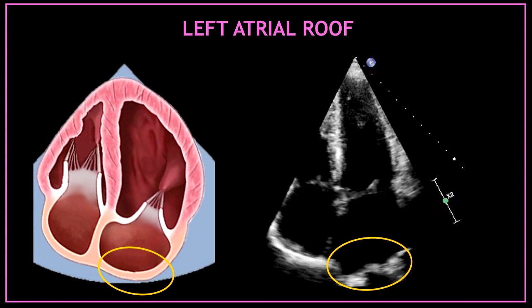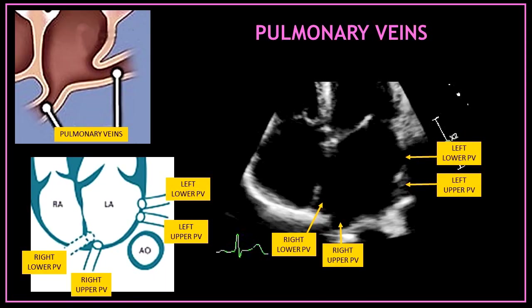This structure at the bottom of the screen that looks like a dense line is the left atrial roof. Entering the left atrium, we have the pulmonary veins. Closer to the inter-atrial septum we can see the right lower pulmonary vein and the right upper pulmonary vein. Closer to the posterior mitral valve annulus we can see the left lower pulmonary vein and the left upper pulmonary vein.